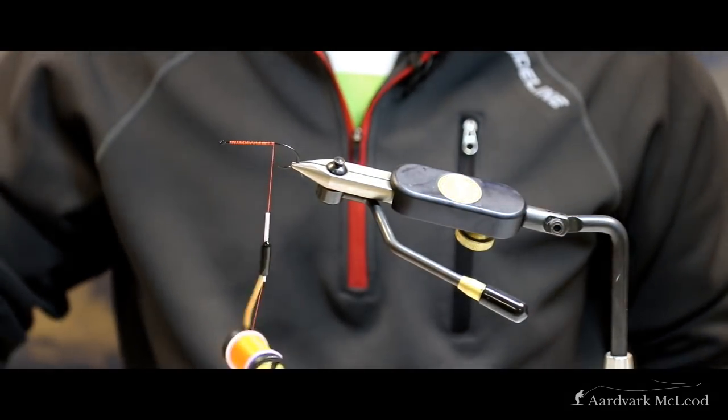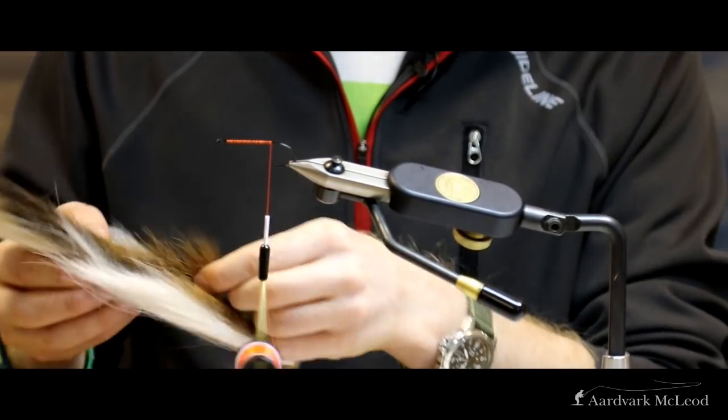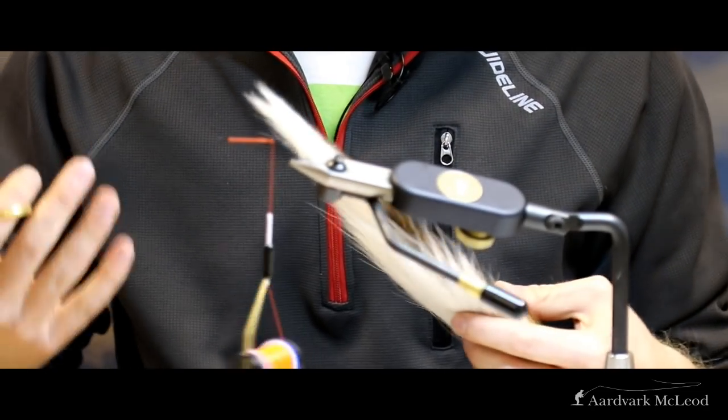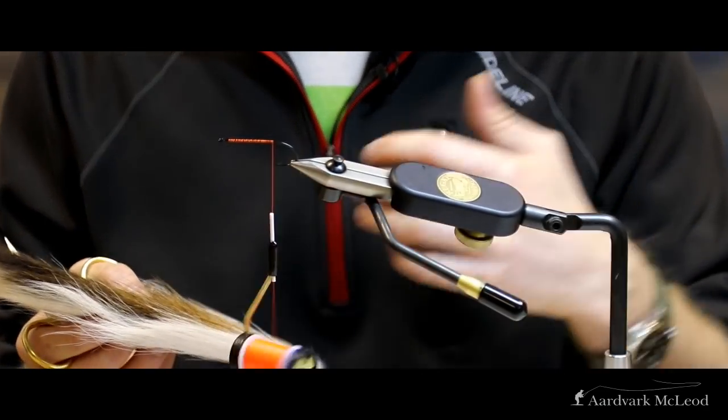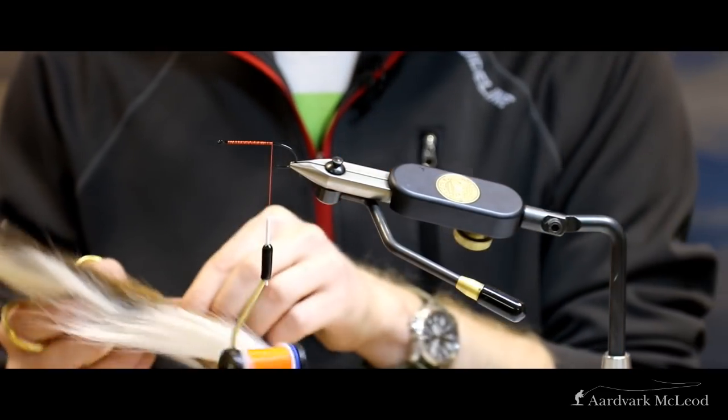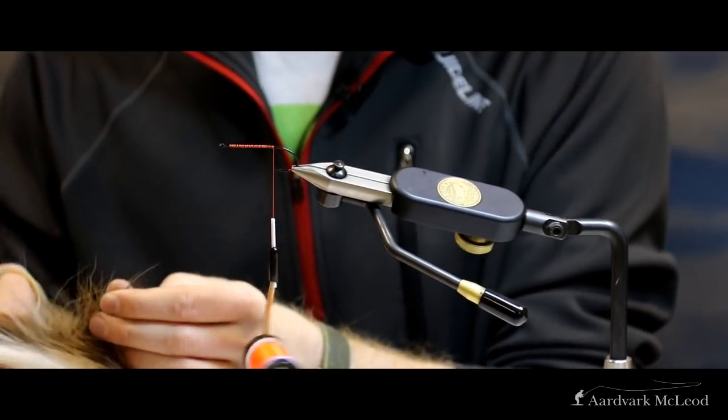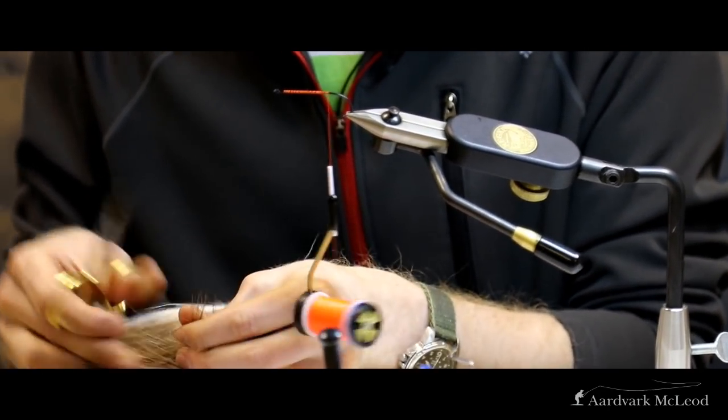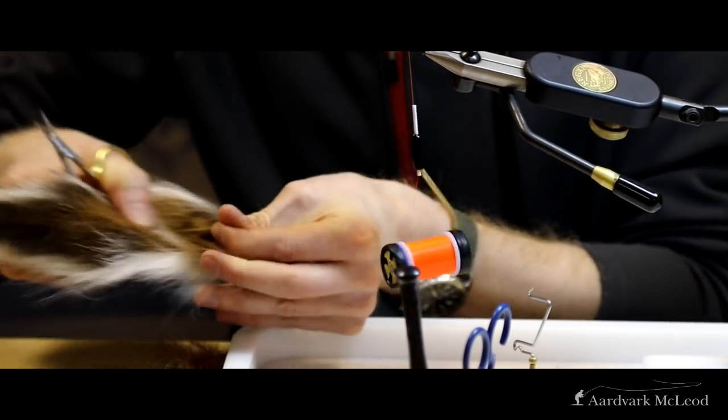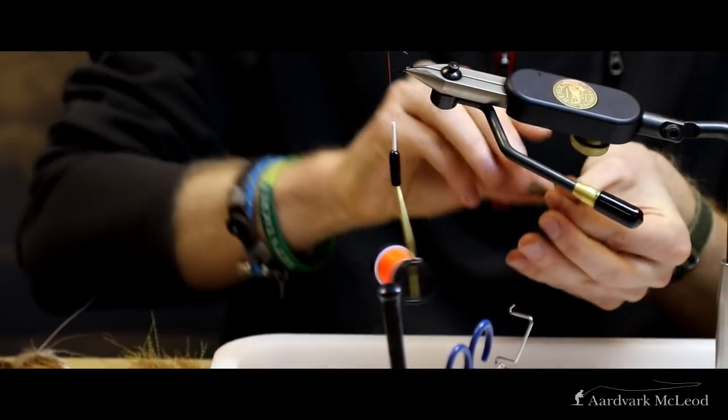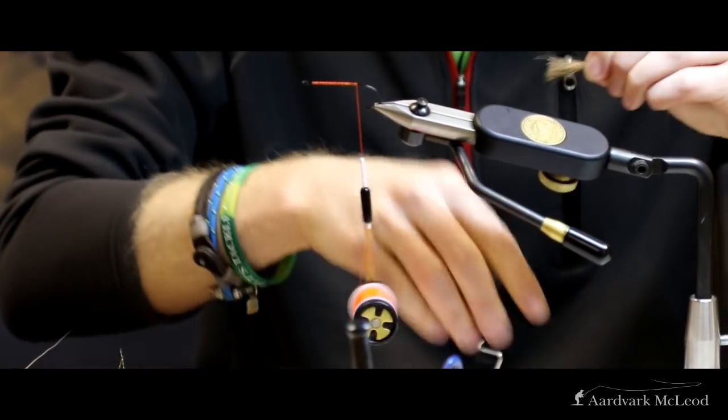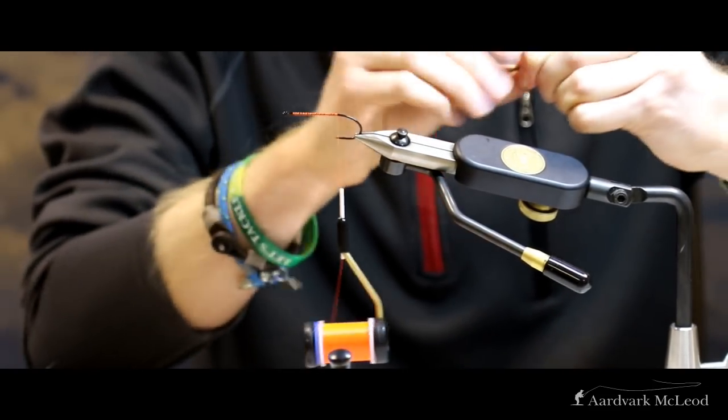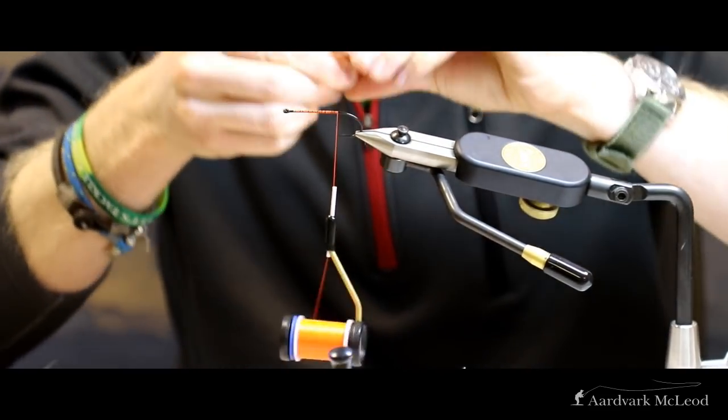Now we're going to start to build our tail up. So here we've got the bucktail. I quite like to build the tail up with this first and then when we put a slightly lighter softer material on top of this, the bucktail will stop that from wrapping around the hook. So just by separating the fibers, we don't want too much, just enough to really form a solid basis. We'll cut in there and then we just want to neaten that up and take away any of the smaller juvenile fibers in the bottom.